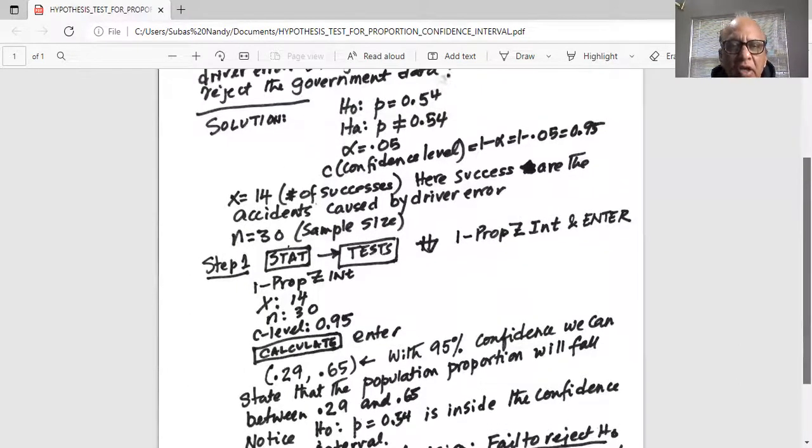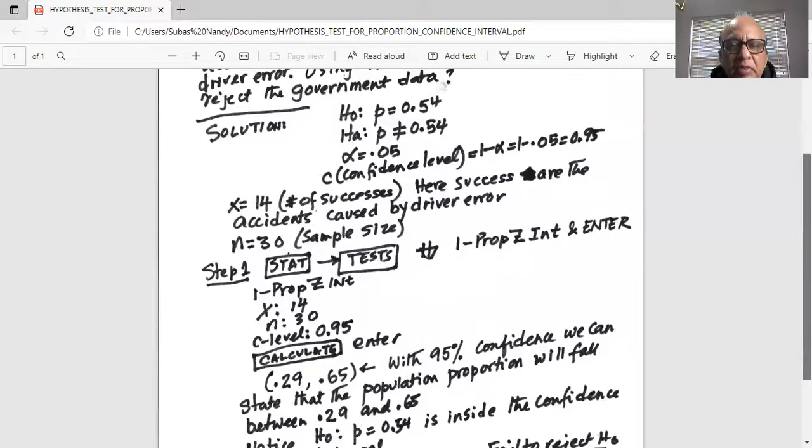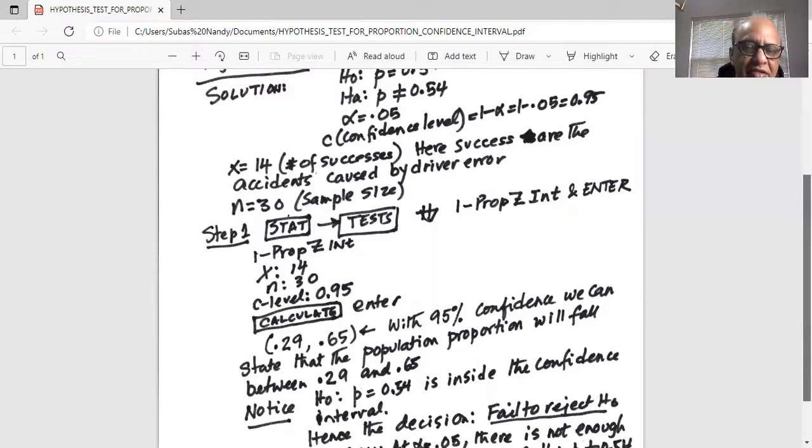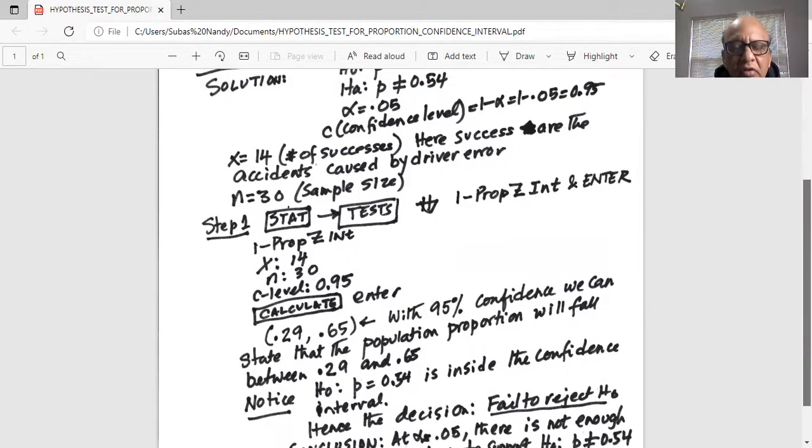Notice our null hypothesis population proportion is equal to 0.54. And that is inside this 95% confidence interval between 0.29 and 0.65.